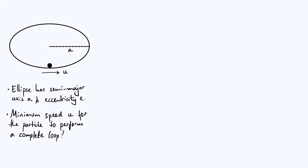Hello everyone. In this video we're going to revisit the problem of finding the minimum speed required for a particle to perform a full loop around some kind of track. This time though, the loop is not going to be circular — it's going to be elliptical instead, as you see in this diagram.